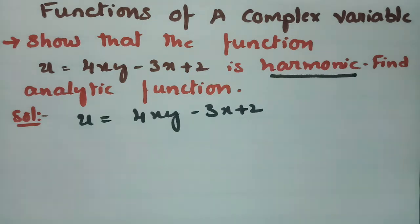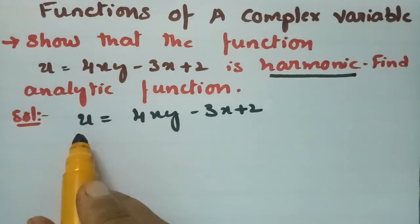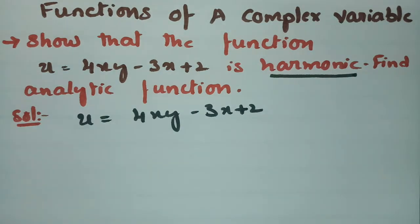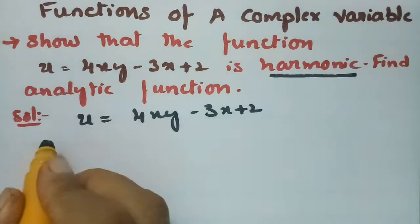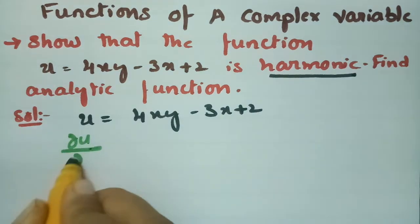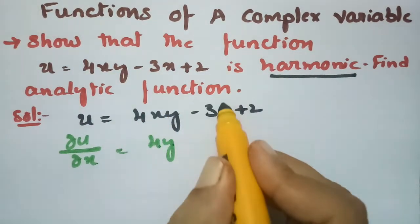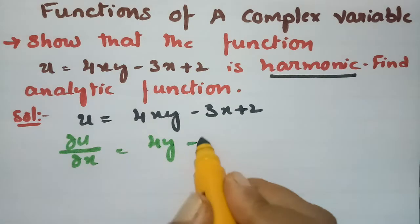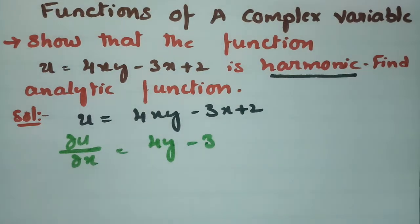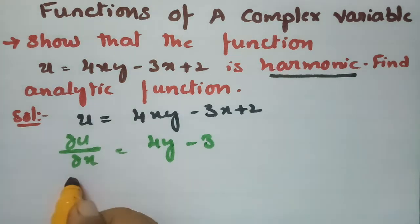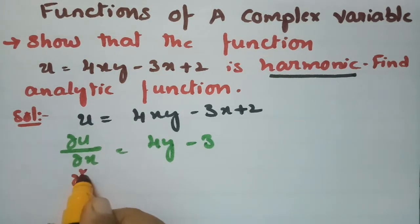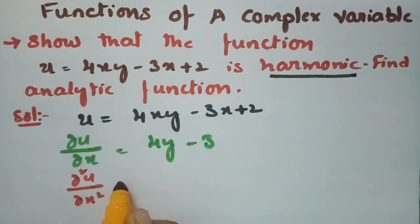The Laplace equation is: ∂²u/∂x² + ∂²u/∂y² = 0. To verify this, we first take the derivative with respect to x: ∂u/∂x = 4y - 3. Then differentiating again with respect to x gives ∂²u/∂x² = 0, since there are no x terms remaining.